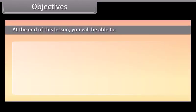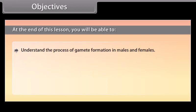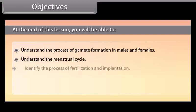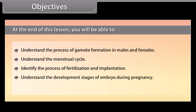Objectives. At the end of this lesson, you will be able to: understand the process of gamete formation in males and females; understand the menstrual cycle; identify the process of fertilization and implantation; understand the development stages of the embryo during pregnancy; and understand parturition and lactation.